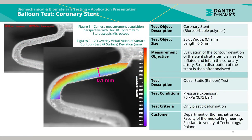This is an application example taken from the cardiac surgery elements. Pictured here using the stereoscopic microscope and the FlexDIC system is a coronary stent. The coronary stent is tested using a balloon expansion test, whereby a balloon is inserted within the stent and expanded, causing the stent to plastically deform.